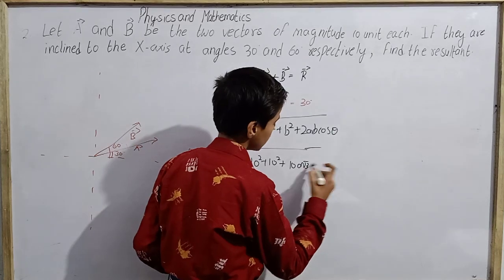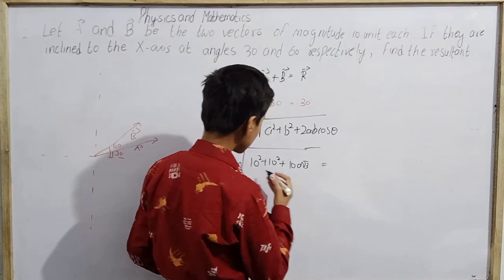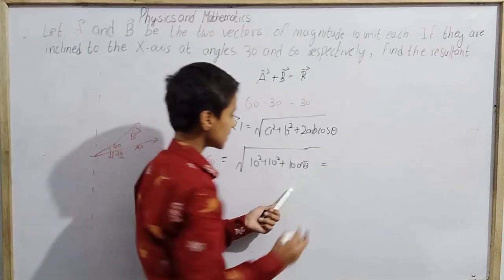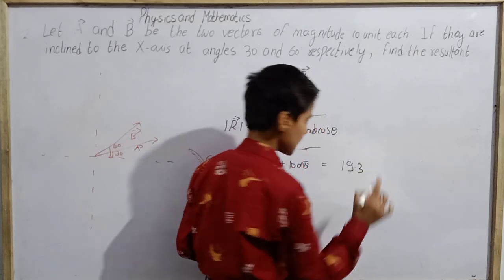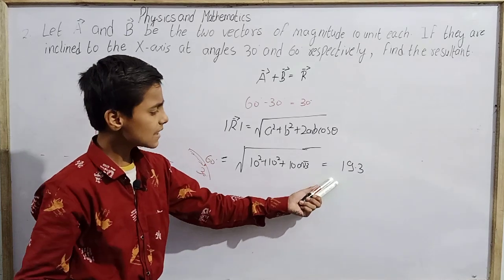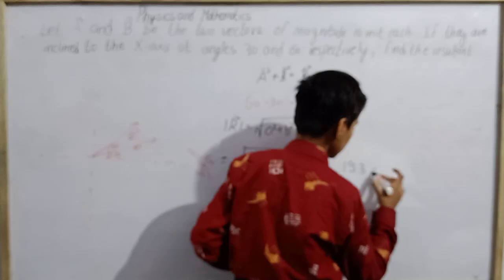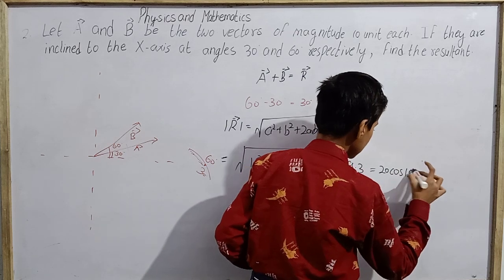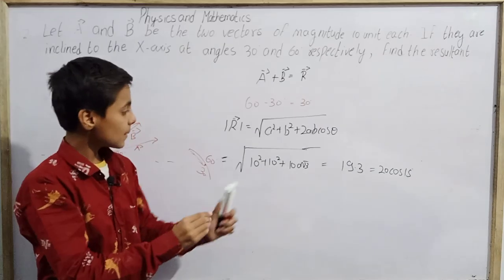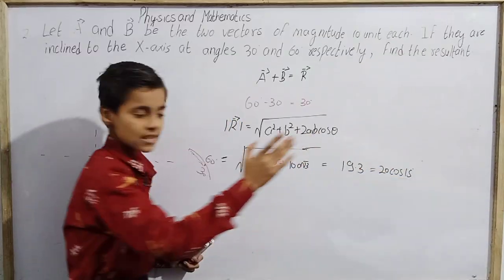The approximate value of √(200 + 100√3) is about 19.3. This can also be written as 20cos15°, which also approximately equals 19.3. Since I prefer to avoid decimals, I will write the magnitude as 20cos15°.